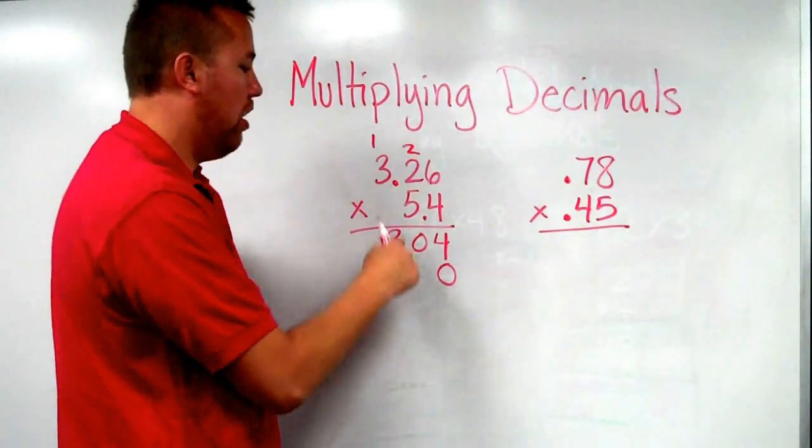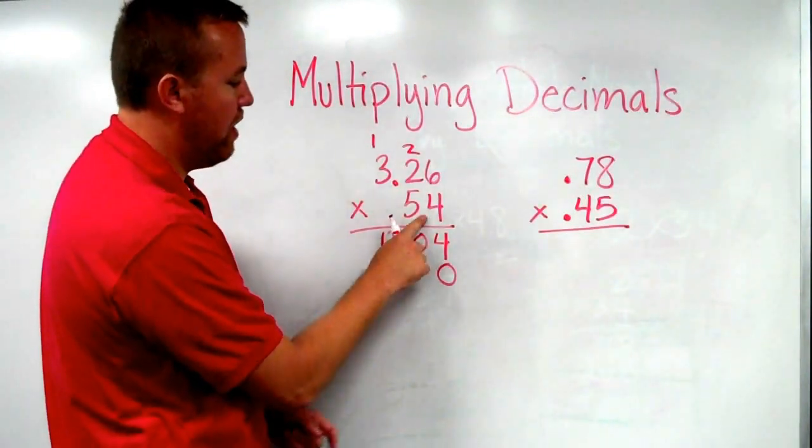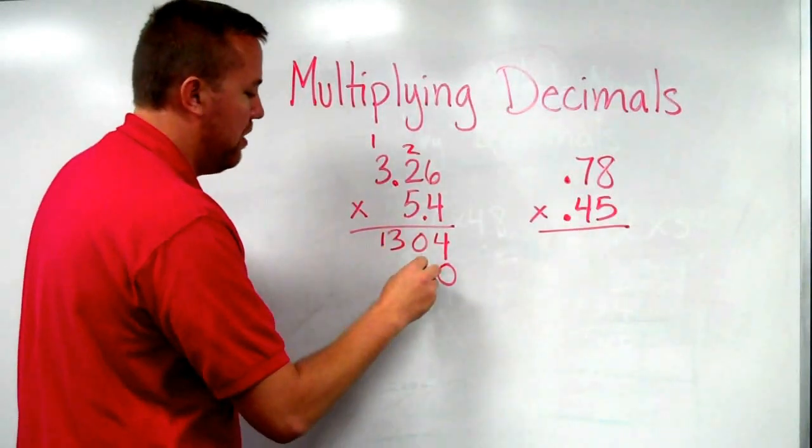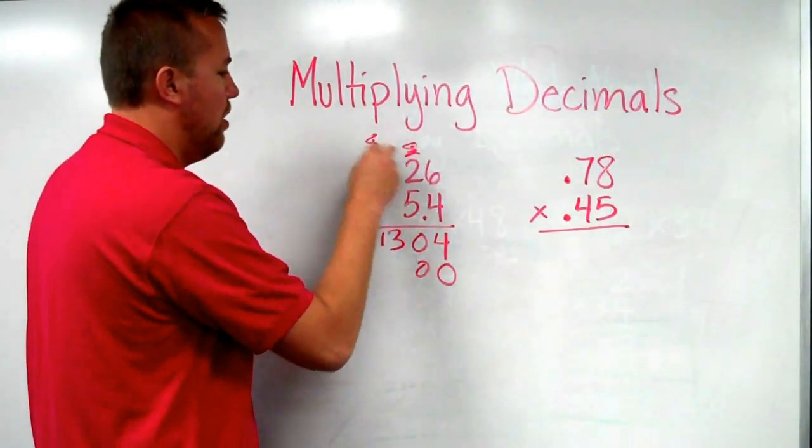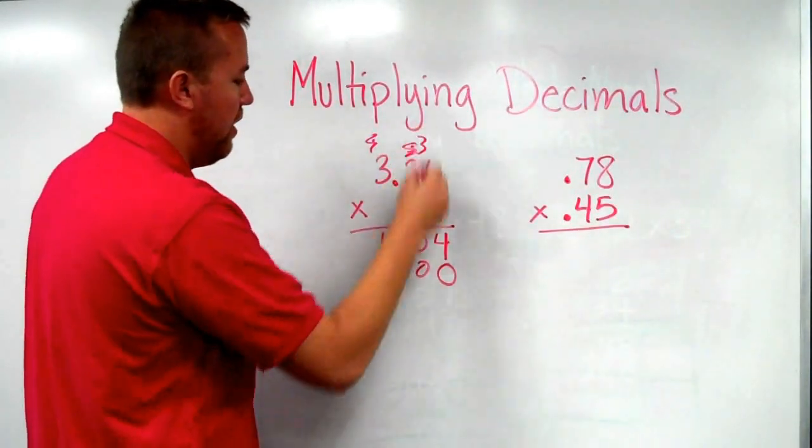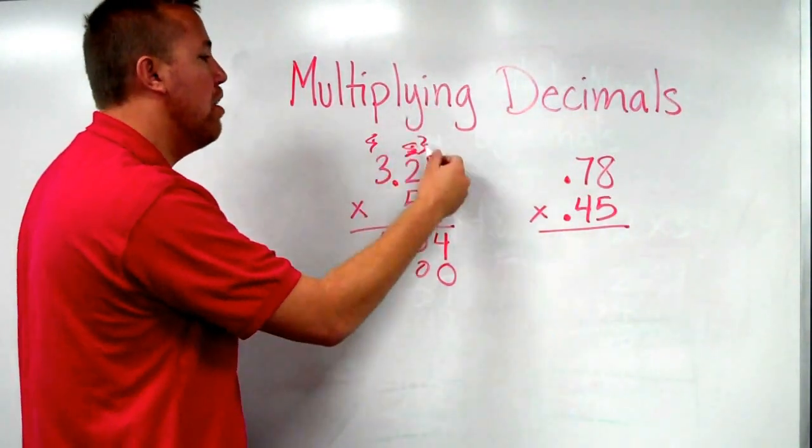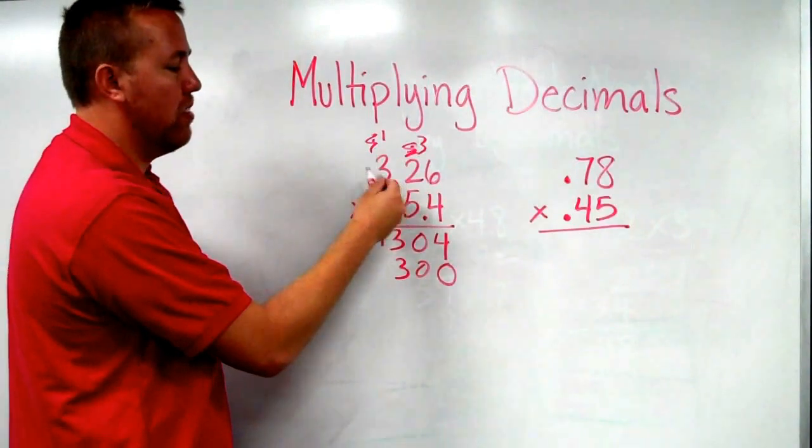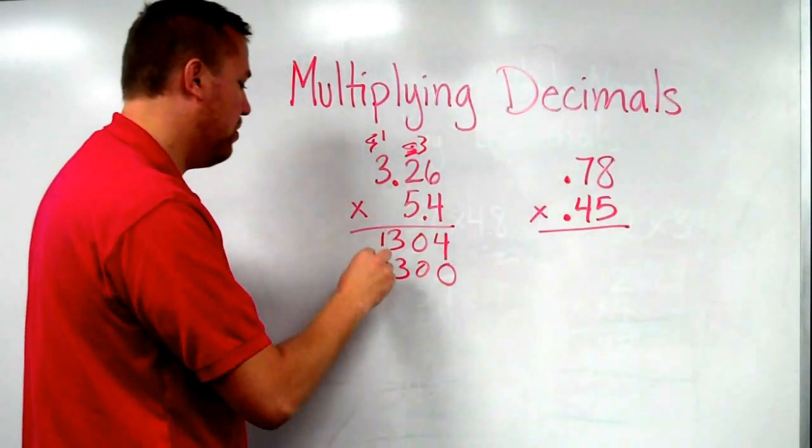Now, zero there, like always, because we're treating that as 54, which means that's 50 times six. Five times six is thirty. So drop down the zero. Carry the three. Five times two is ten. Plus three is thirteen. Carry the one. Five times three is fifteen. Fifteen plus one equals sixteen.